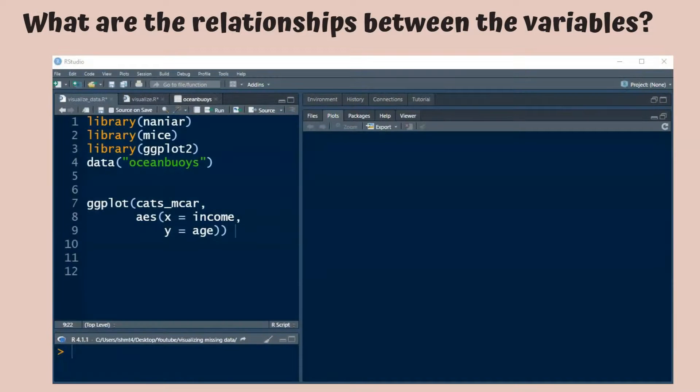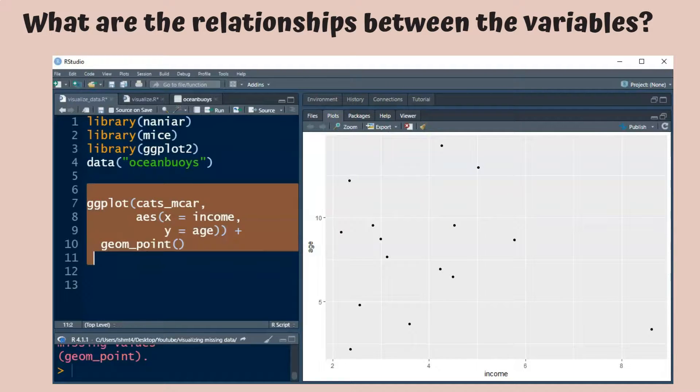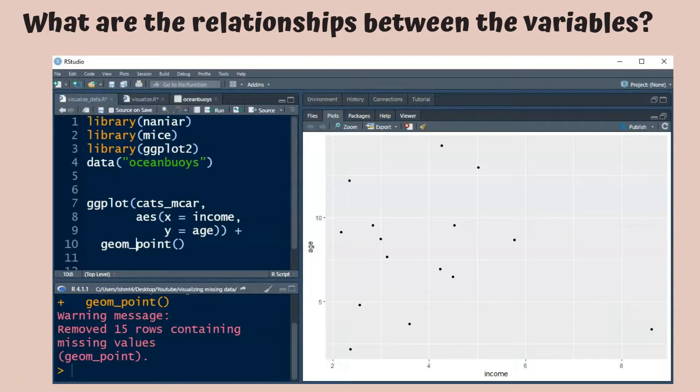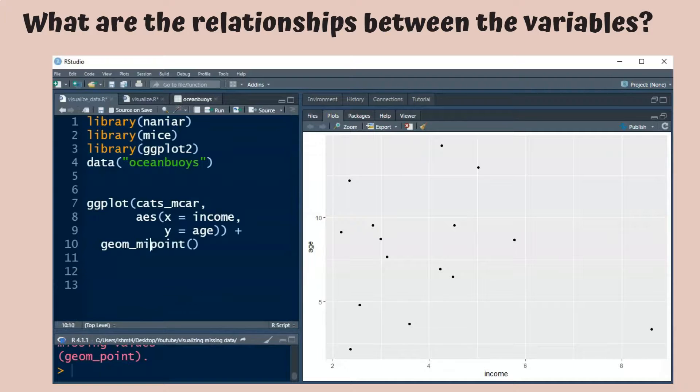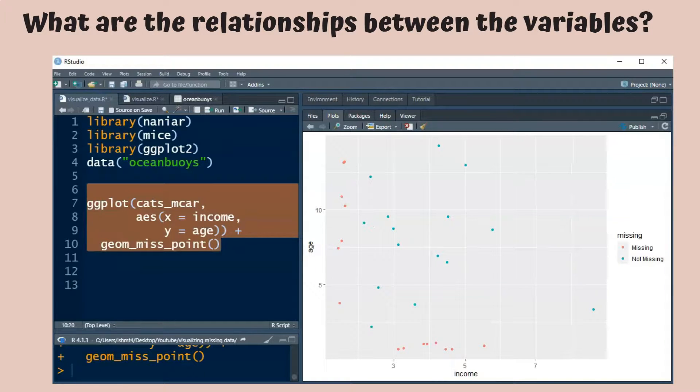Finally, we will illustrate relationships between variables while still acknowledging the missing values. Let's plot income against age for the cats MCAR data set. We can do this in ggplot2. Now, we will get a warning telling us that there are 15 rows containing missing values. We'll now use geom miss point from Narniar instead of geom point. And you'll see that the plot has been augmented by these red dots that indicate missing values. So it shows age even when income is missing, and it shows income even when age is missing.